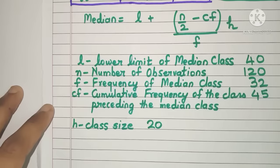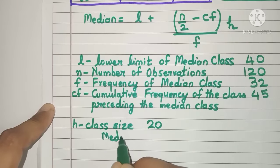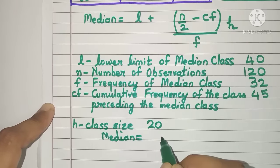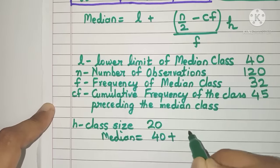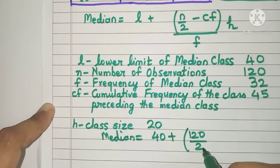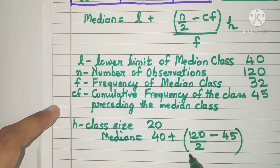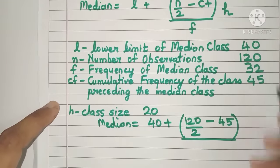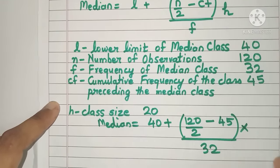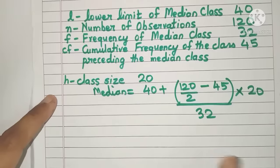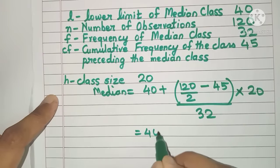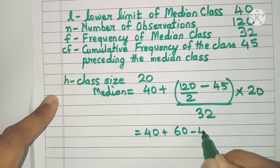Now let's substitute all the values. So median is L which is 40 plus N by 2, 120 by 2 minus CF which is 45 divided by the frequency 32 multiplied by H, class size 20. Let's simplify this further.